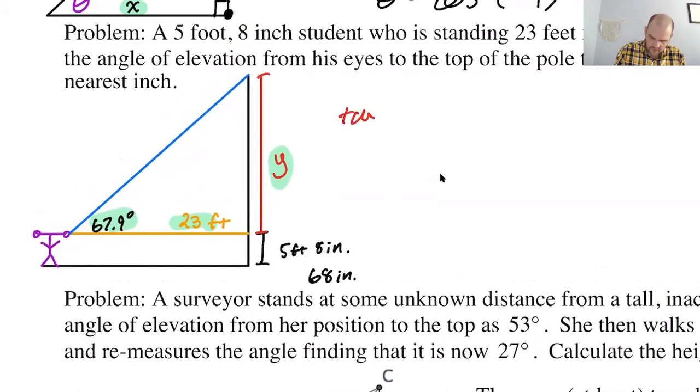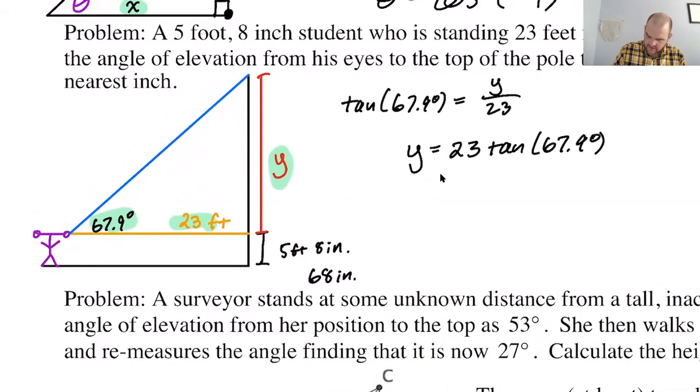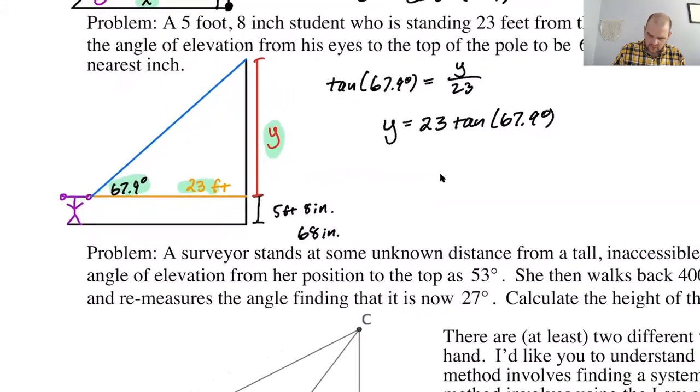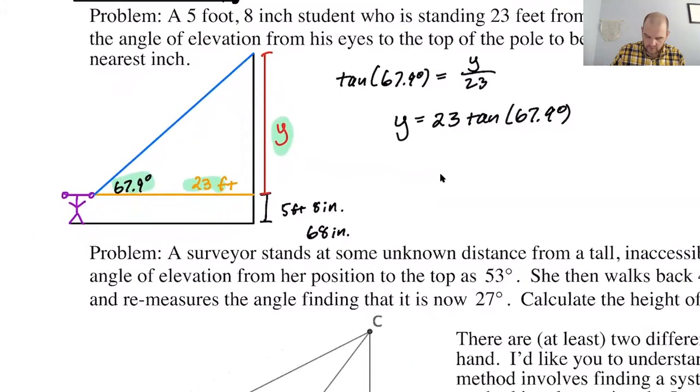So tangent. We're writing in red. Too much. It's too aggressive. The tangent of 67.9 degrees is opposite over adjacent, which means this will be Y over 23. Just kind of cross multiply here. Y equals 23 tangent 67.9 degrees. So we can get a decimal for that. And then the total height, we have to remember to add in. So it'll be 68 plus Y, which is approximately something. All right. So let's see if we can do this.